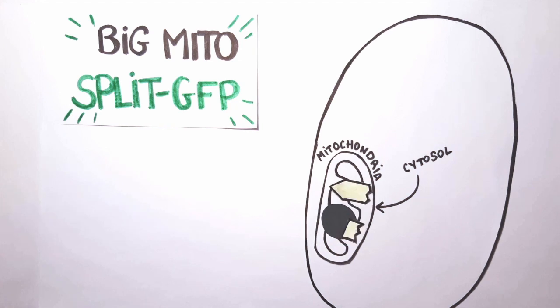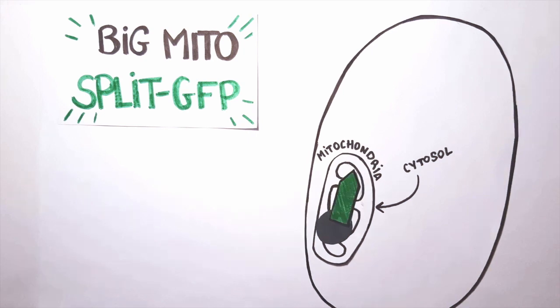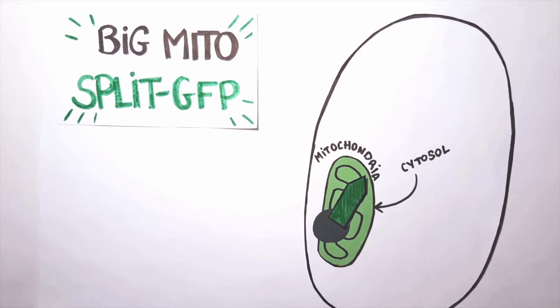In the mitochondria, the small fragment of GFP fused to my protein can interact with the big fragment, and the GFP can be reconstituted, leading to fluorescence signal emission.